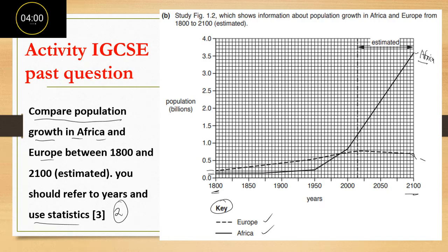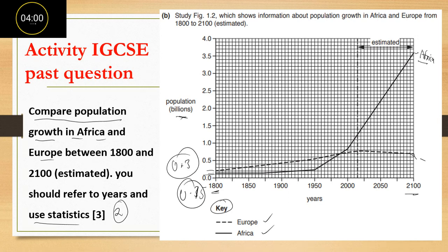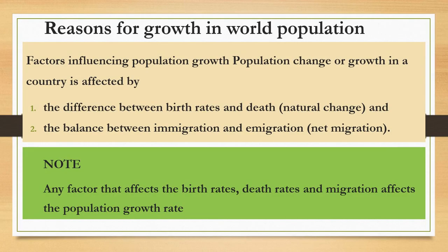In 1800, Africa's population is around 0.15 billion people, while Europe's population is around 0.3 billion people. Once you bring in those statistics, you get your mark. You can also identify the year where the population of Europe and Africa is the same at a crossover point on the graph.